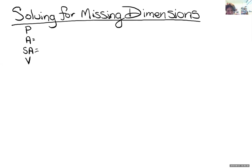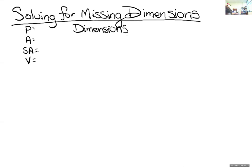We've even seen a couple pretty simple problems about solving for missing dimensions. What does it mean to solve for a missing dimension? It means instead of asking you to find perimeter, area, surface area, or volume, they'll give you those things and ask you to find a missing dimension instead. A dimension is all those different things — the lines we use to measure a shape.